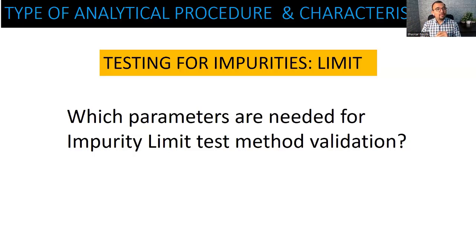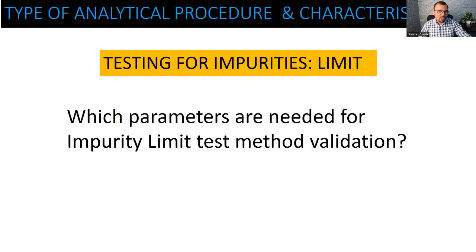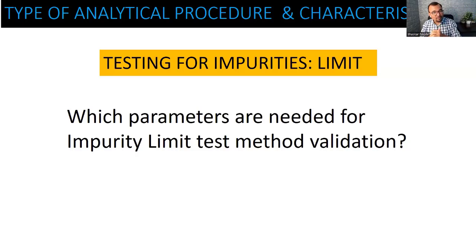Let us now understand the possibility of performing the limit of quantitation (LOQ). For LOQ, you identify the concentration which can be measured with adequate precision and accuracy. But we already said that precision is not possible and accuracy is not possible. Therefore, LOQ is also not going to be a possibility, because LOQ requires precision. If you say LOQ is possible, you are contradicting your first two important statements. LOQ is also not a possibility because we are not able to evaluate accuracy and precision.